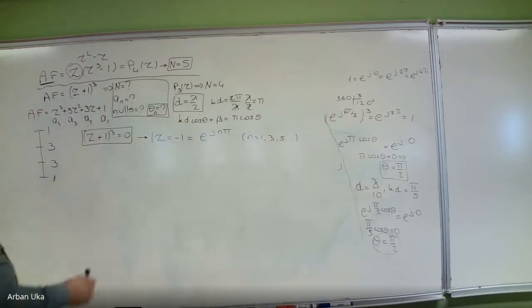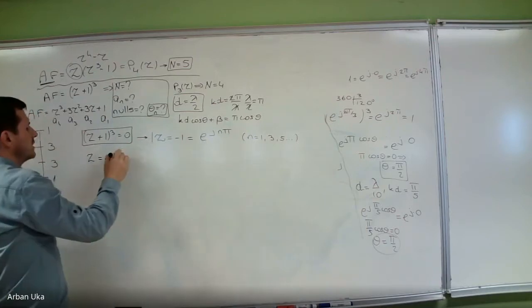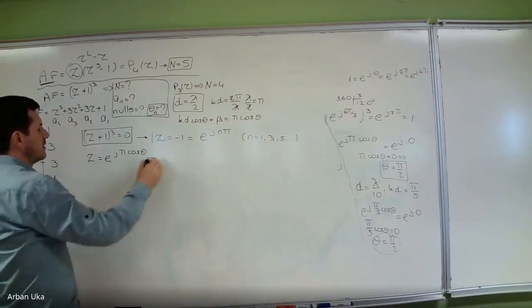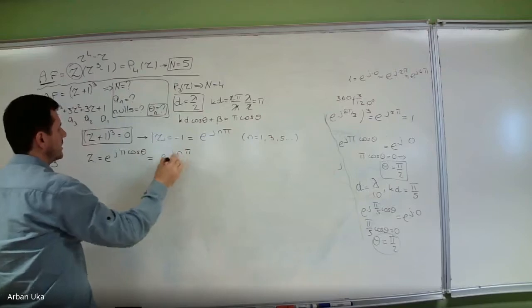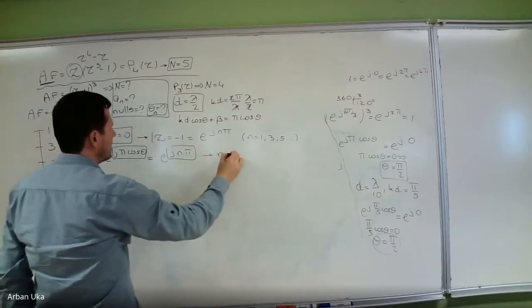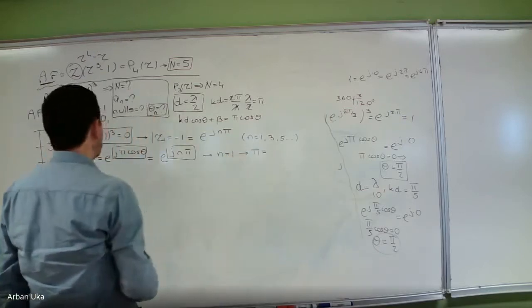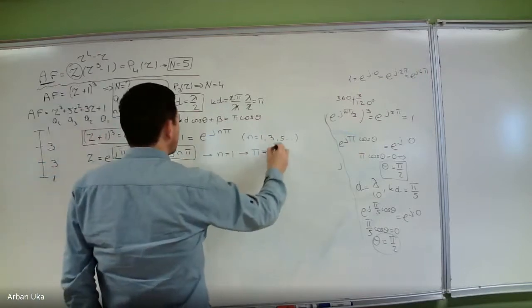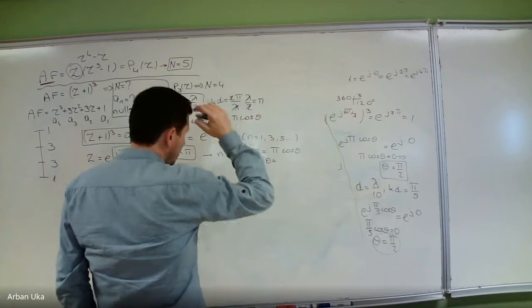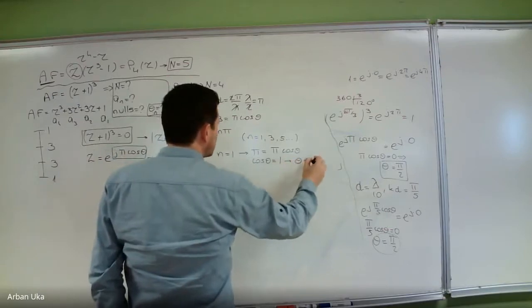And z = e^(j·ψ) = e^(j·π·cosθ). Now we should equate these two arguments. So for m = 1, this implies π = π·cosθ, so cosθ = 1, and cosθ = 1 means θ = 0°.